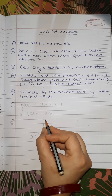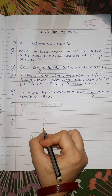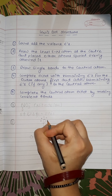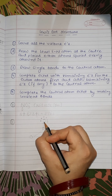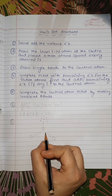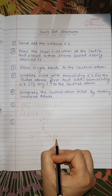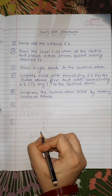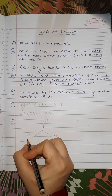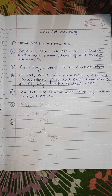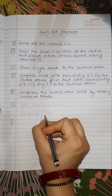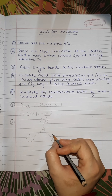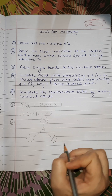We complete the octet of each outer oxygen atom. Each oxygen already has 2 electrons from the bond, so we add 6 more to reach 8 — completing its octet. We do this for all three oxygens. That uses 8 + 8 + 8 = 24 electrons, which is all 24 we had. All electrons have been used.